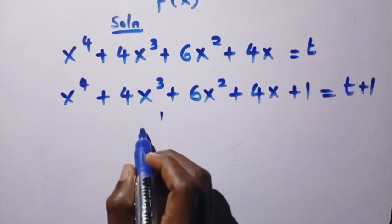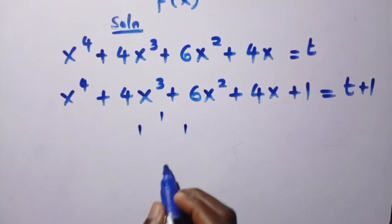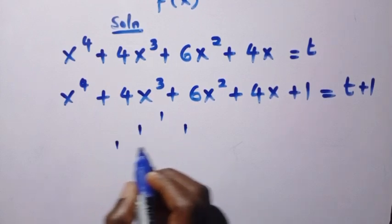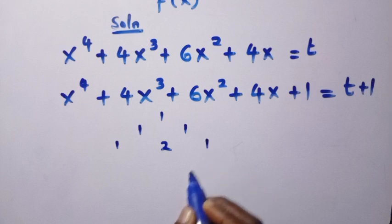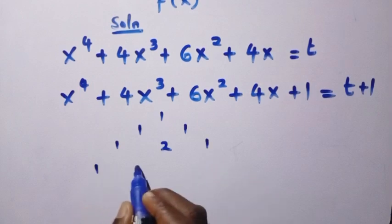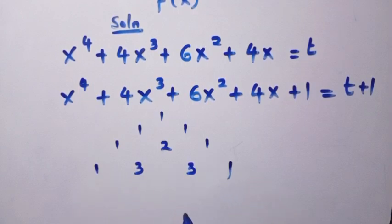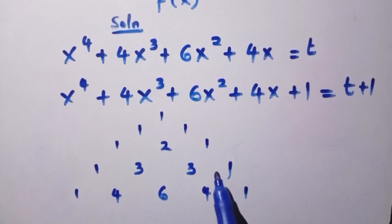If the power is 1, we have 1, 1. Then it continues: 1, 2, 1; then 1, 3, 3, 1; and here we have 1, 4, 6, 4, 1. I'll stop here because I've provided all the coefficients for when the power is 4.